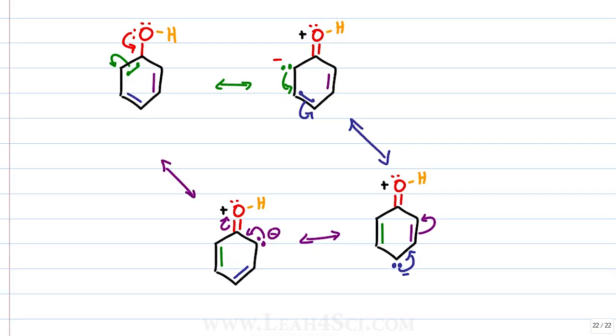This reforms the initial structure with one slight difference, and that is that the pi bonds all shifted over one position, but it's still considered the same structure because the pi bonds in benzene are always moving round and round, giving us a total of 4 resonance structures for the phenol molecule.